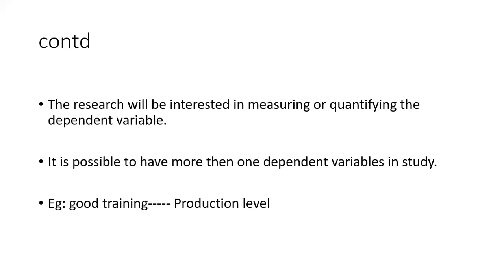The production level is dependent because it depends on the training. If the training is good, efficiency increases and the production level is good. If the training is moderate, the impact on the production level is moderate as well. So training has an impact on the production level. The production level is the dependent variable — it depends on the other variable, which in our case is the training.